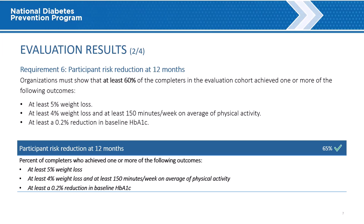Evaluation Results, part 2 of 4. Requirement 6 states that organizations must show that at least 60% of completers in the evaluation cohort achieved one or more of the following outcomes at the end of the program: at least a 5% weight loss; at least a 4% weight loss combined with performing at least 150 minutes per week on average of physical activity; or at least a 0.2% reduction in baseline HbA1c. The green check indicates that at least 60% of the 35 completers met this requirement — in this example, 65% met the requirement.